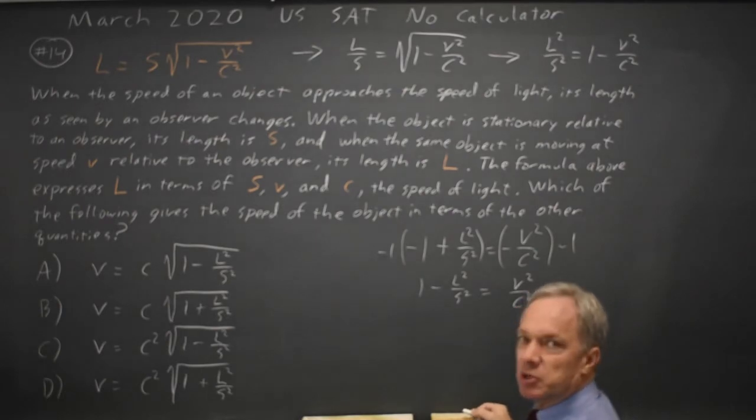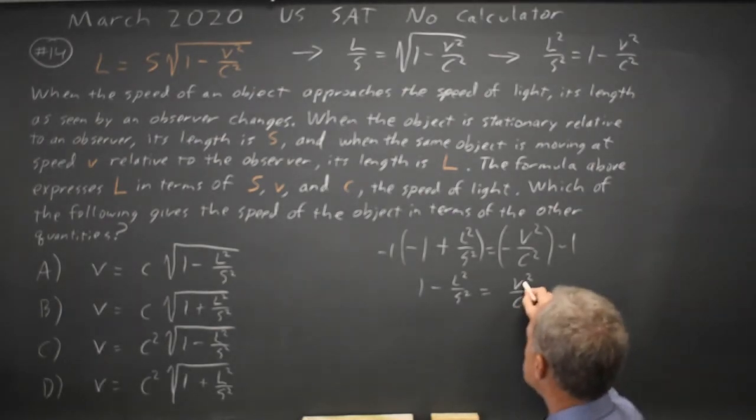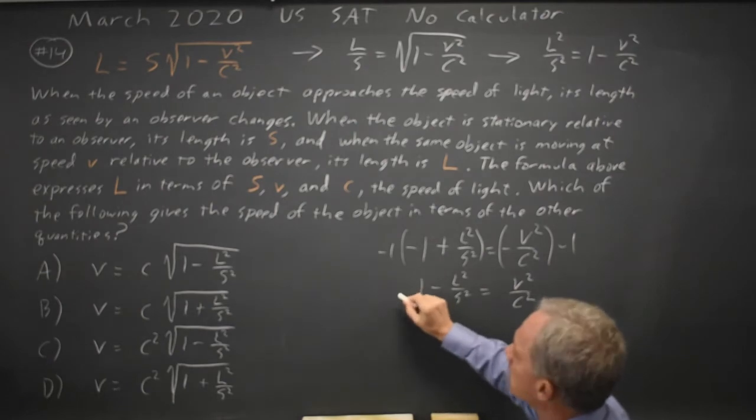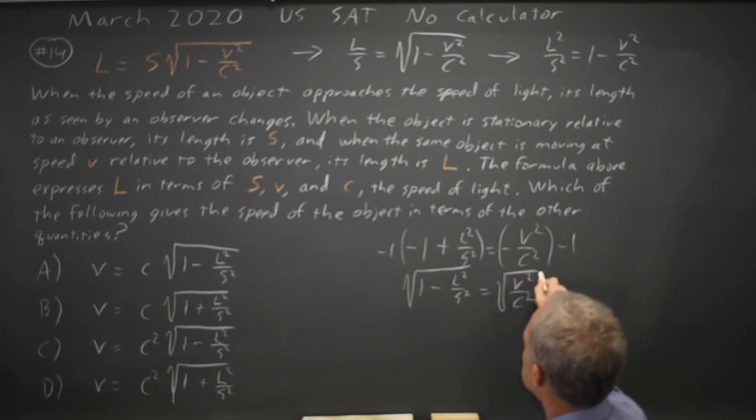I'm going to square root both sides because I'm trying to get V by itself and I've got a V squared. Besides this expression, it looks like it belongs in the square root in my answer choices. So the square root 1 minus L squared over S squared equals V over C.